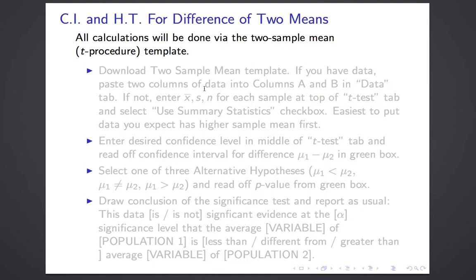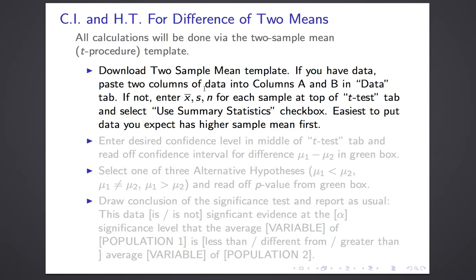Here's how to use the template. We'll use the two-sample mean template, which is on the templates page of my web page. It is a numerical procedure — second column — two samples in two populations — second row. When you open it, it looks very much like the one-sample mean template: same color scheme, same tabs. It has a data tab, but now with two columns. You paste your two columns of data into columns A and B. You can paste them in either order — either sample can be sample one — just keep track of which is which. A good habit is to always put the one you expect to have the higher sample mean first. If you only know x-bar, S, and N, you put that on the t-test tab and check the use summary statistics checkbox.